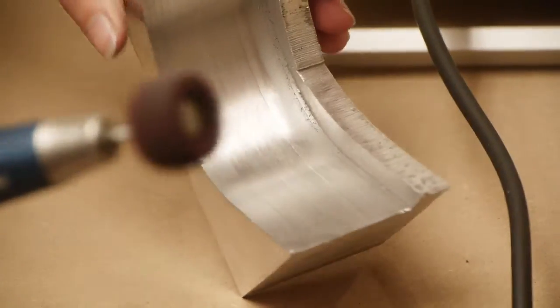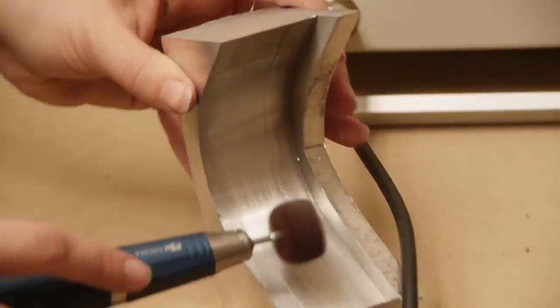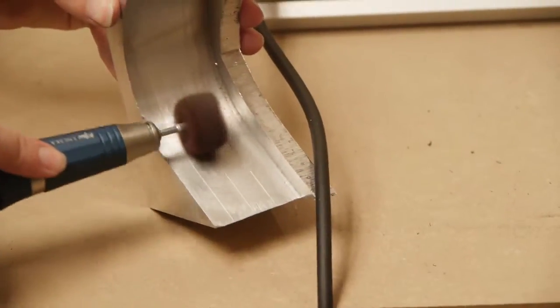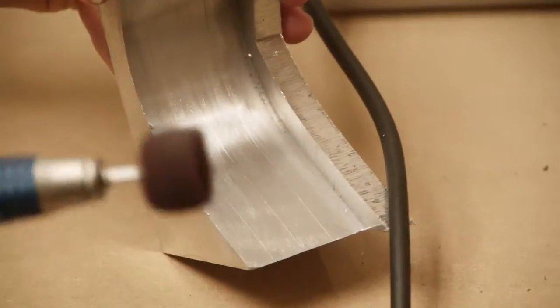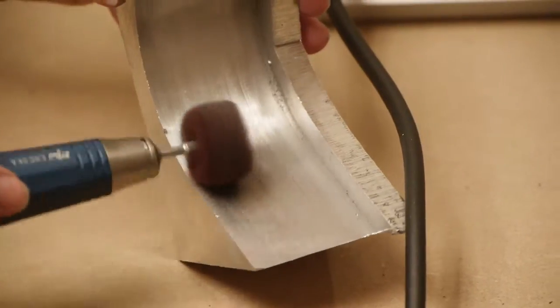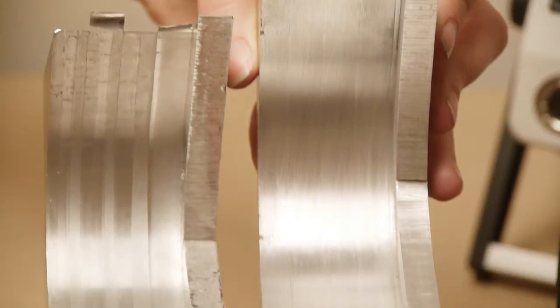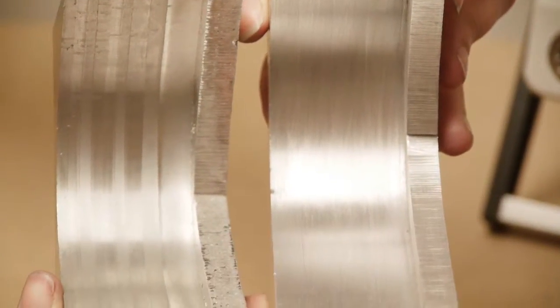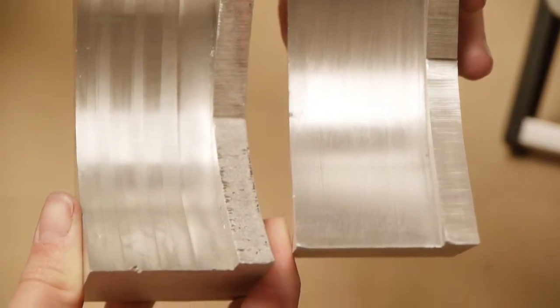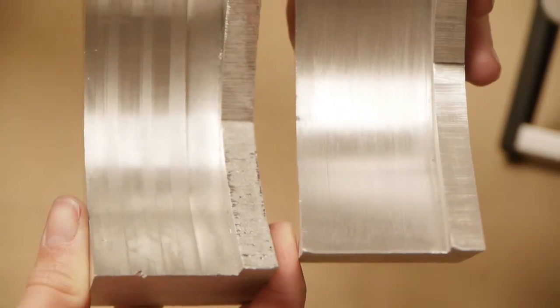You can see in this instance how high torque this is. I'm applying quite a lot of pressure here and still not really slowing down the machine at all. So you can see already, just using quite a coarse nylon mop, a lot of the machine lines have been evened out.